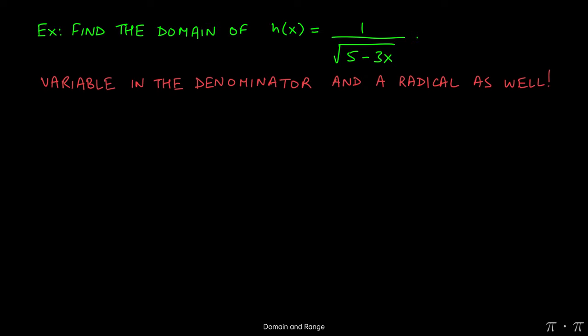First we need to recognize that we have a variable in the denominator, so there are going to be places where the denominator itself might be zero. That's one place to watch out for. Now also there's a radical in the denominator as well. So hopefully you remember that the radicand, or the thing inside the radical, cannot be negative.